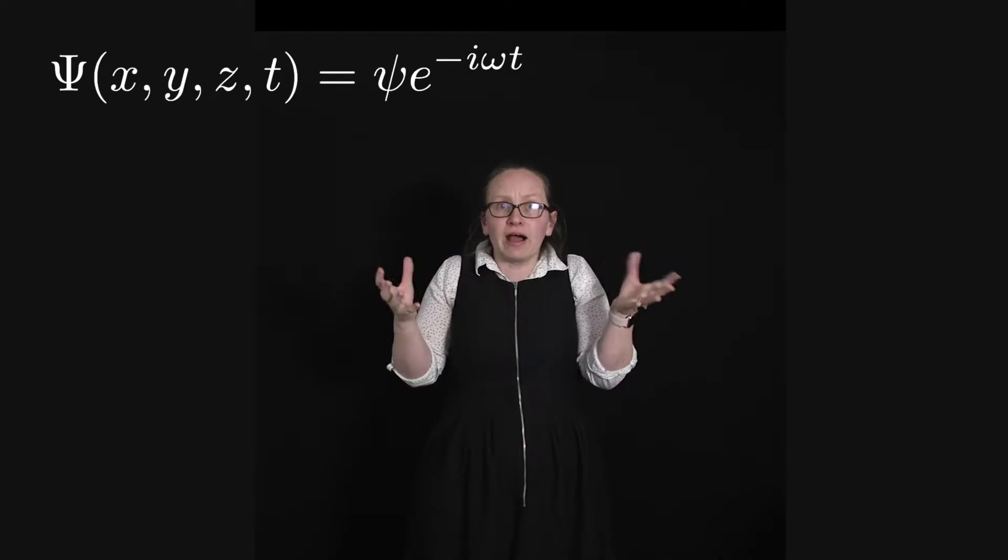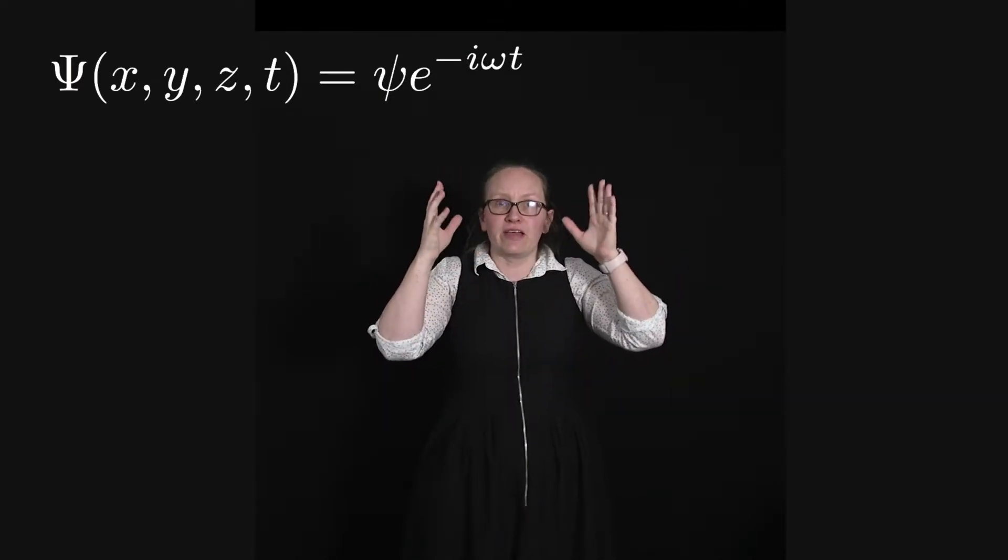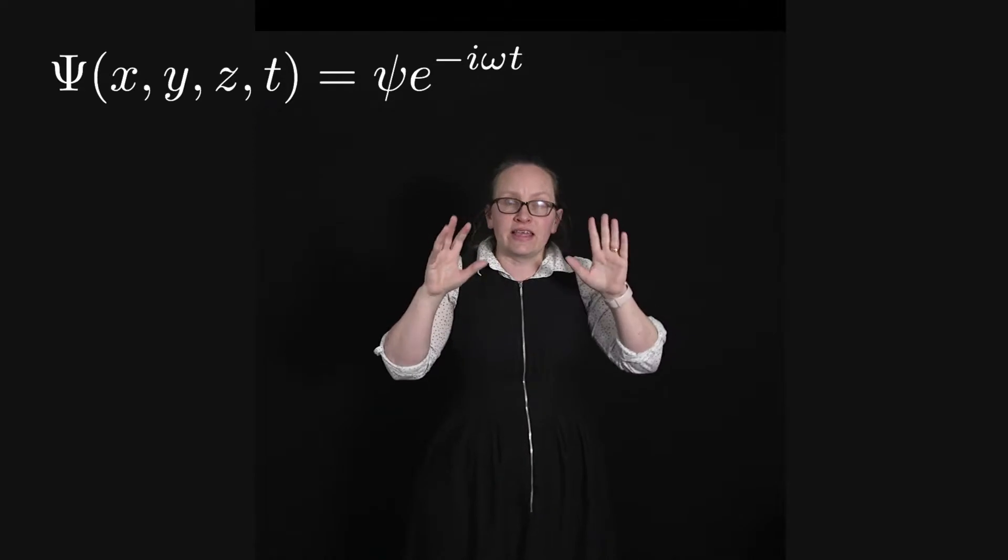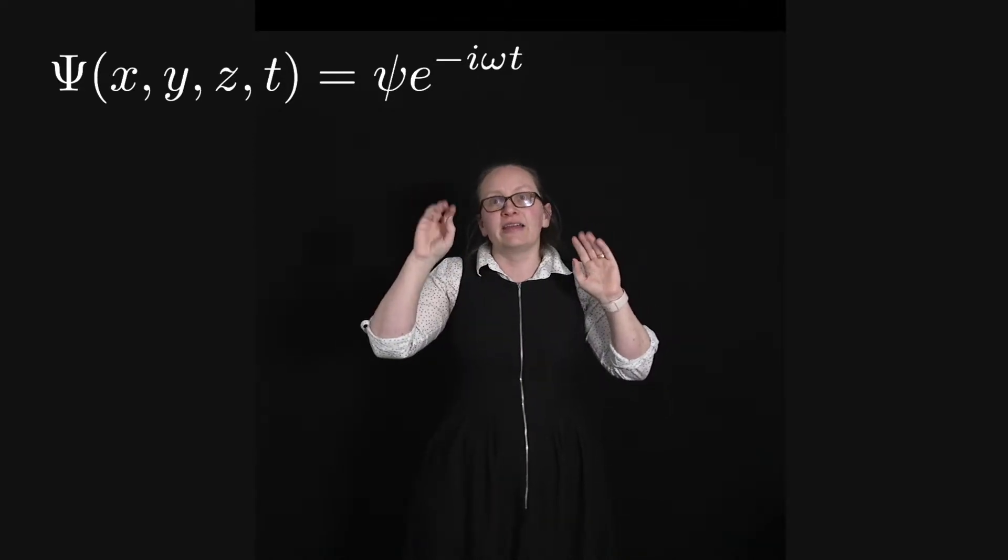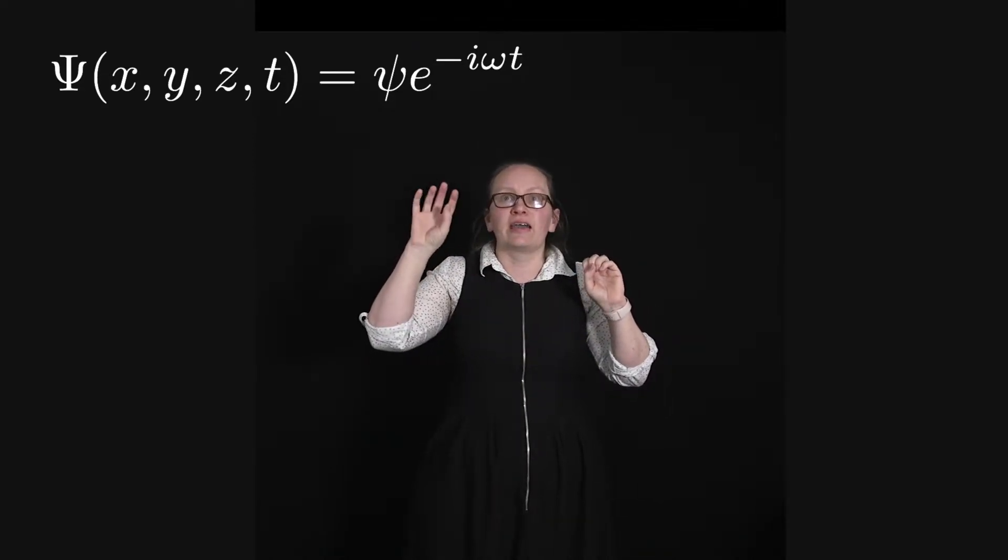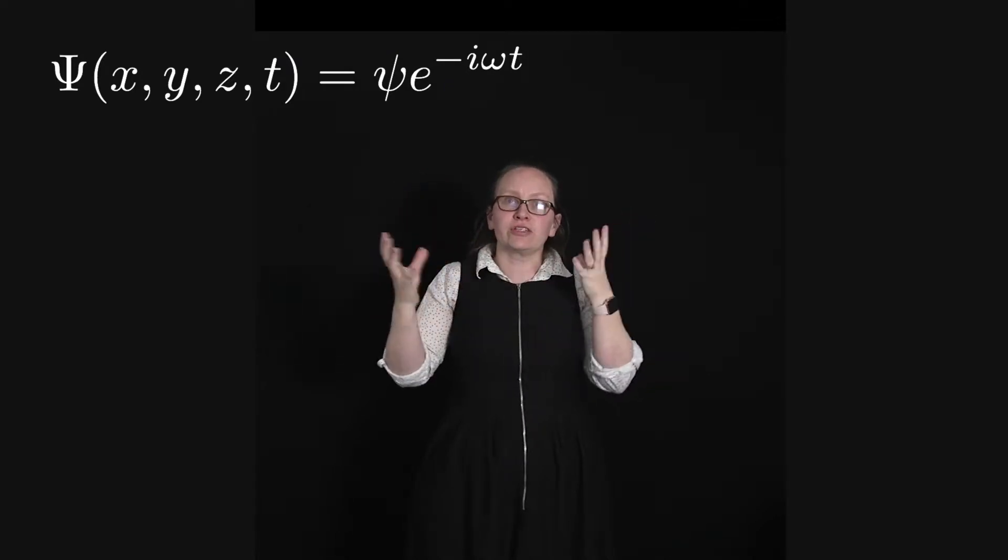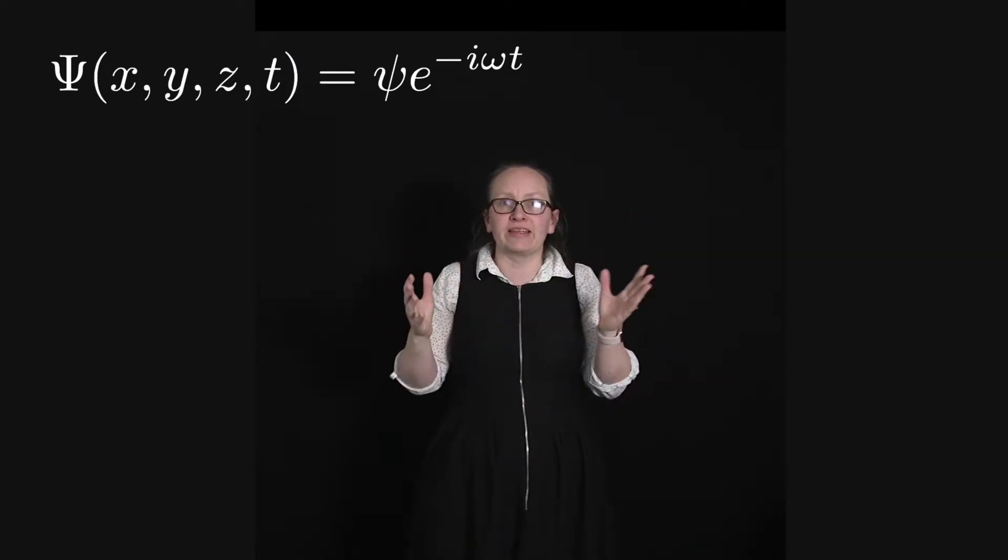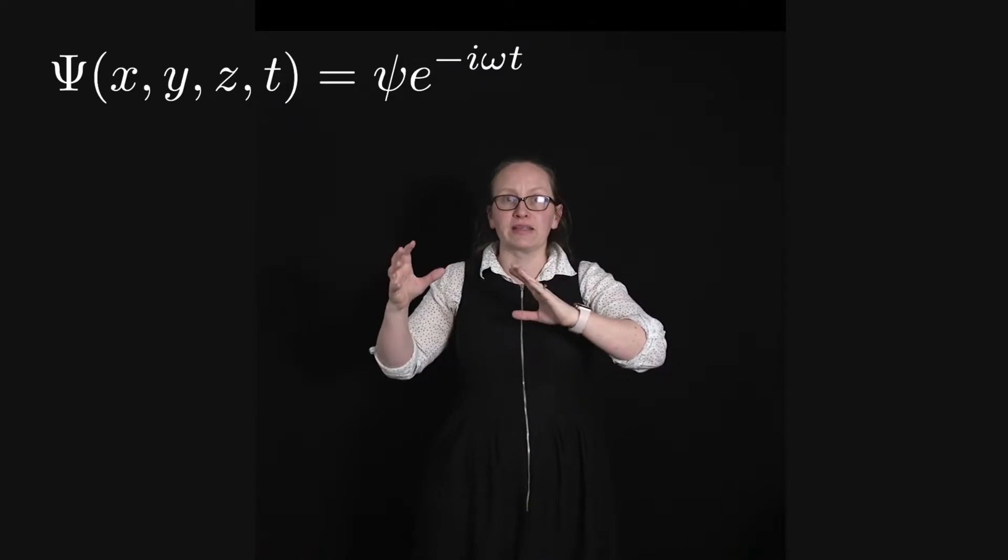So we can write capital Psi of x, y, z and t is equal to lowercase Psi times e to the minus i omega t, which shows us how we can separate out the spatial and the temporal parts.